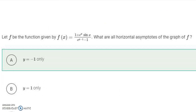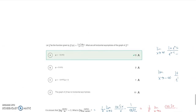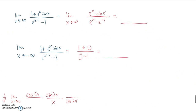This next problem asks for horizontal asymptotes of the graph of f — not vertical asymptotes. We're looking at end behavior as x goes toward infinity or negative infinity. Looking at the limit as x approaches infinity, the plus 1 and minus 1 become insignificant. Dividing numerator and denominator by e^x gives sine(x) times e^(negative x), or sine(x) times e. As x approaches infinity, the sine oscillates up and down, so this limit does not exist. There is no horizontal asymptote as x goes to positive infinity.